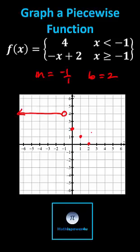But we only graph the line when x is greater than or equal to negative one, so we make a closed point on the line at x equals negative one, this point here, and graph to the right.